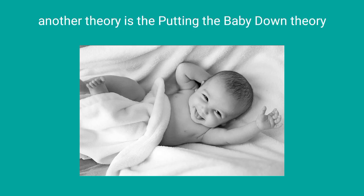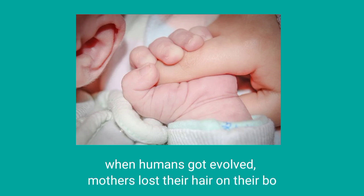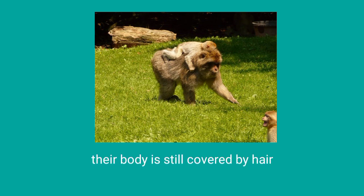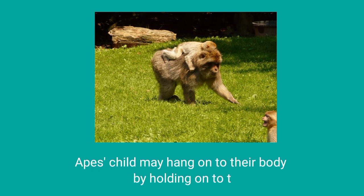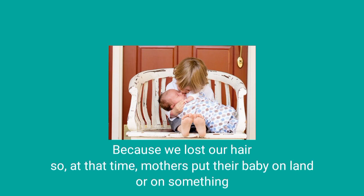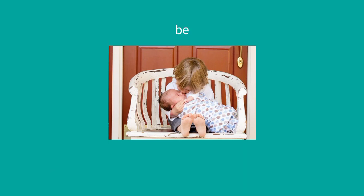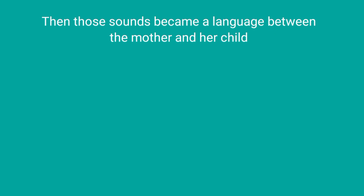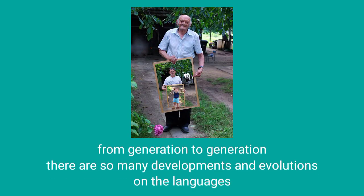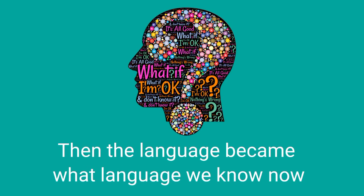Another theory is the putting the baby down theory. When humans evolved, mothers lost the hair on their bodies — it is different from apes, whose bodies are still covered by hair. An ape's child may hang on to its mother's body by holding on to her hair. Because we lost our hair, at that time mothers put their babies on the ground or on something. Because of that, their babies started to cry, and to stop their babies crying, they created sounds. This sound became a language between the mother and her child. The child still used the language when they grew up, and then used the same language with their own babies. From generation to generation, there were many developments and evolutions in language, until language became what we know now.